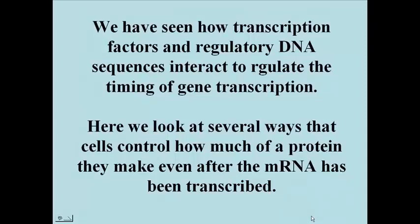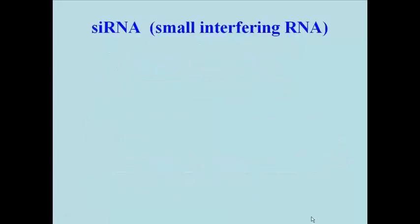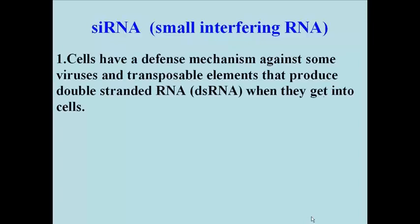Here we'll look at how cells control the amounts of protein they make by regulating events after transcription initiation. The first example we'll consider is that of small interfering or siRNA. In some ways, this is an unusual and exceptional example because it's part of a eukaryotic cell's defense mechanism against invasion by viruses and transposons or transposable elements.